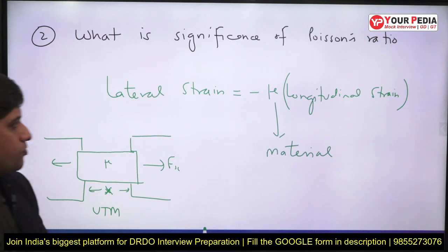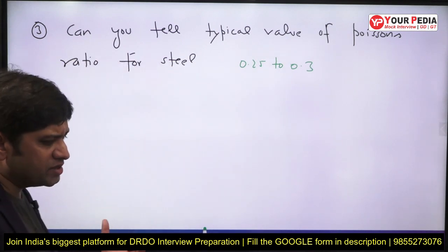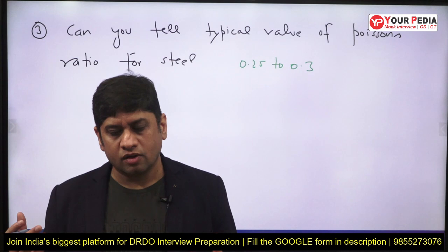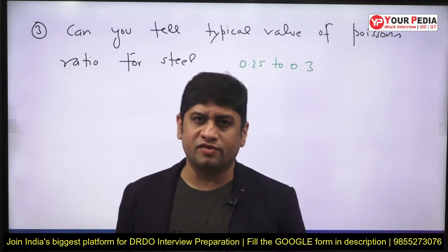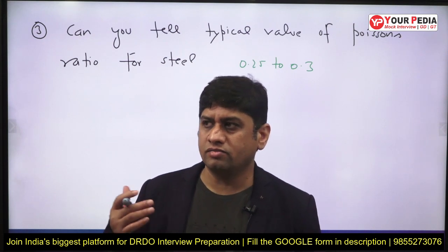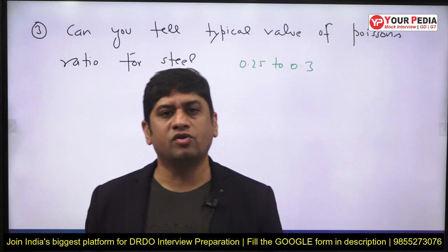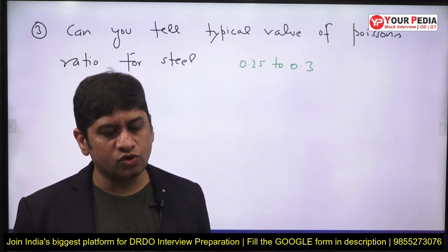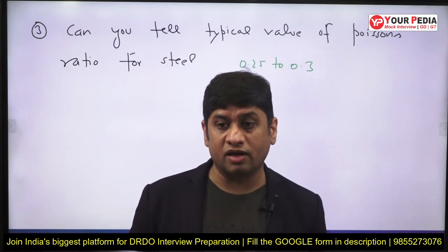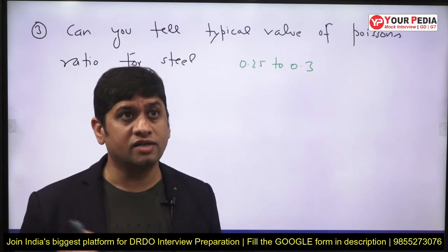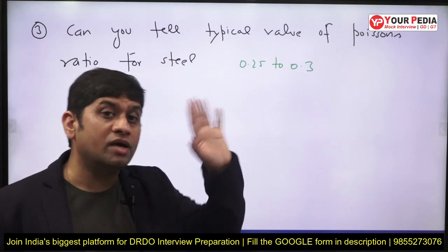They may also test your presence of mind on numerical values — in numericals, elastic modulus, yield strength, and all these values are already given. So they will ask: do you know the value of Poisson's ratio for steel? If your presence of mind is there, you answer: the value is 0.25 to 0.3. Similarly they might ask values like viscosity of water or surface tension.